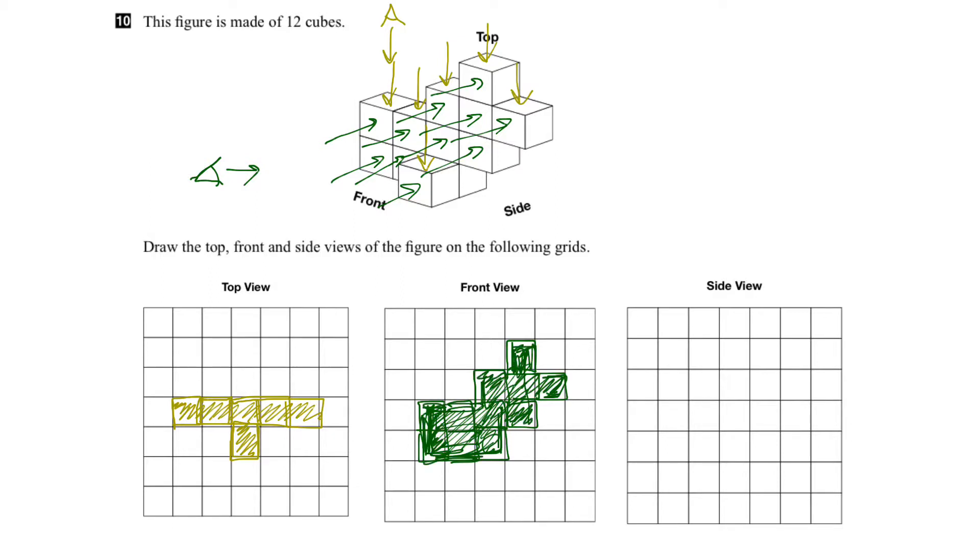Okay, for side view, our eye would be over here, and we'd be looking in this direction. So our light rays would be hitting here, here, here, here, and here.